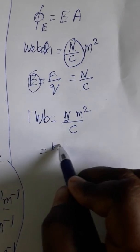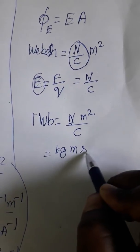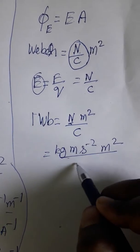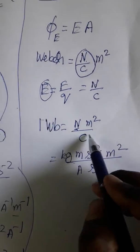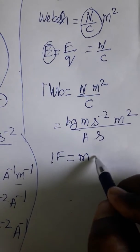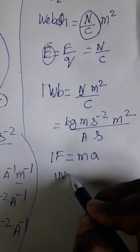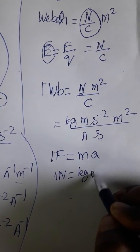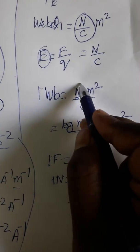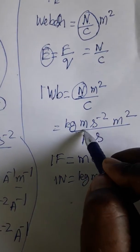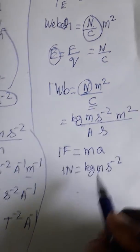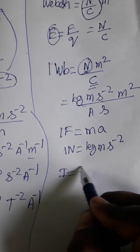For the dimension formula, the SI unit for Newton is kg·m·s⁻². Meter square stays as is. Coulombs is ampere into second. One Newton is equal to mass into acceleration, so one Newton equals kg·m·s⁻². Coulombs does not have its own dimension symbol.